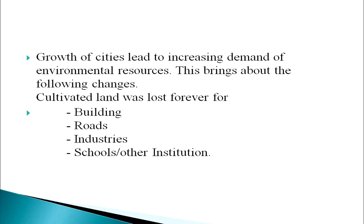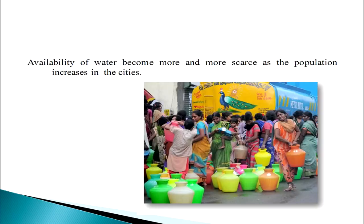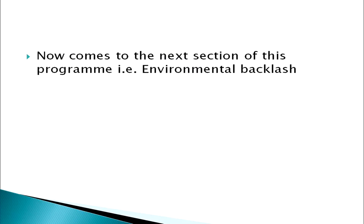Growth of cities leads to increasing demand for environmental resources. Cultivated land is lost forever for building roads, schools, and industries. Availability of water becomes scarcer as city populations increase. Learners, you must have understood now how the environment has been spoiled by humans. It has been degraded to such an extent that humans now have to suffer its backlash.